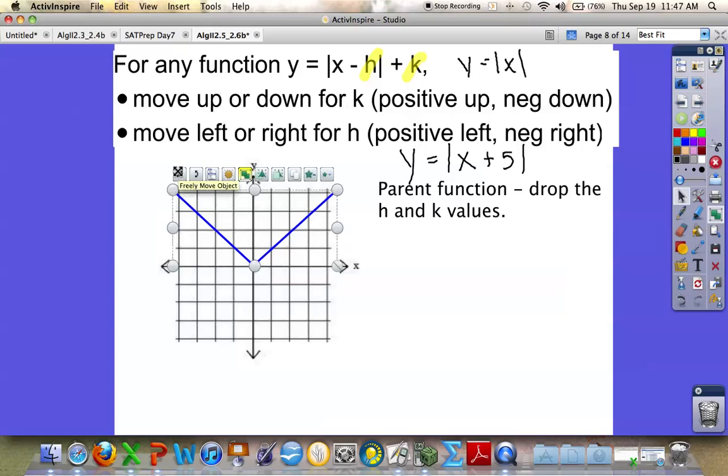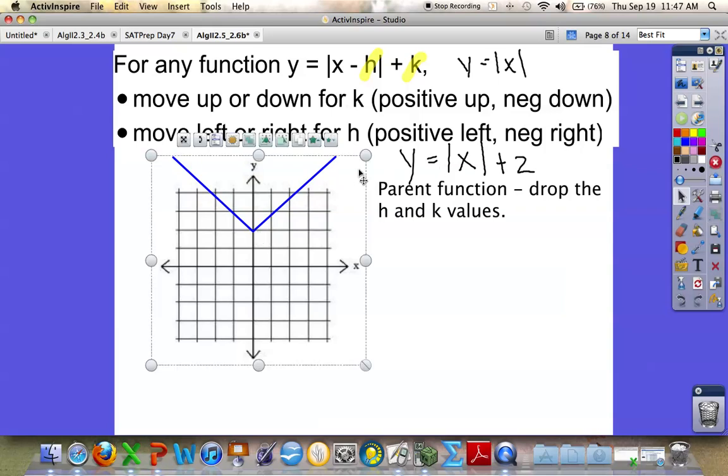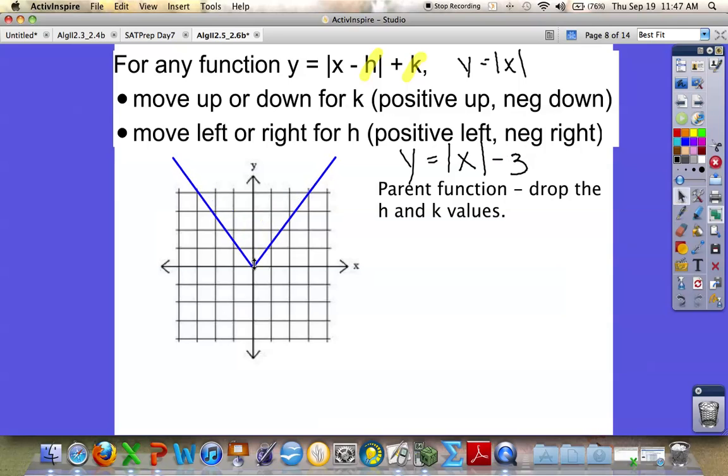So now let's talk about what happens when you add a number to the outside of the graph. Let's say we have the absolute value of X plus 2. That moves the parent graph up 1, 2 units. And this is Y equals the absolute value of X plus 2. Well, what if I said absolute value of X minus 3? Now I would start back at the origin and I would take that graph and move it down 1, 2, 3.